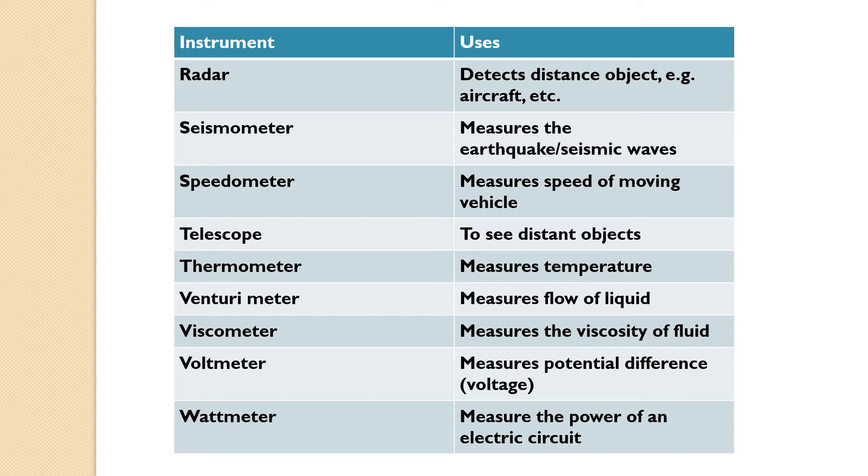Venturi meter is to measure flow of liquid. Viscometer measures the viscosity of fluid. Voltmeter is to measure the potential difference in an electric circuit. Wattmeter is to measure the power.